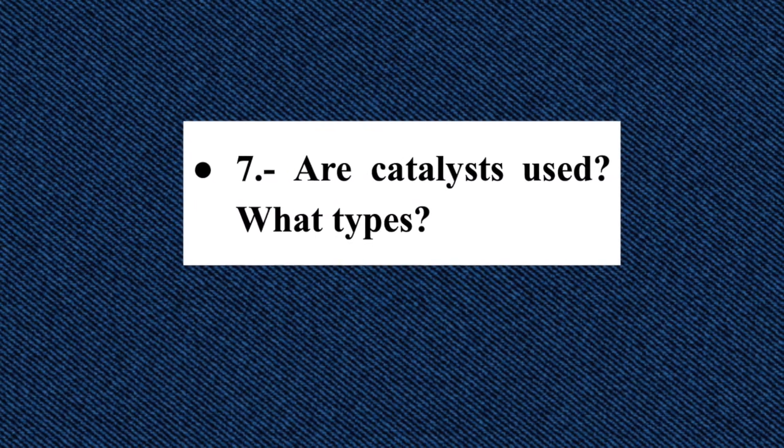Question seven: are catalysts used, and what types? The catalysts used in selective catalytic reduction are mainly metal oxides such as vanadium and titanium, but also platinum or palladium. These are often arranged in a honeycomb structure as a porous plated metal. They help reduce the activation energy to transform harmful NOx gases into inert nitrogen gases. You can find this reaction mainly in the catalytic converter in your car.